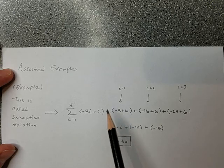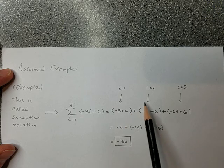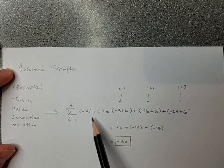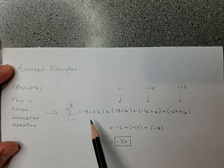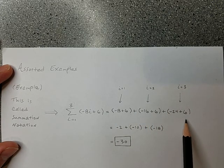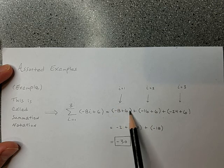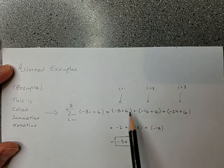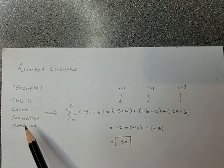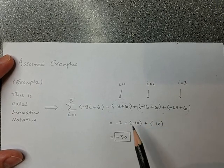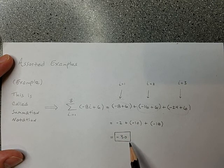You see what I have here? If I put 1 into this, it looks like negative 8 plus 6. If I put 2 into this, it looks like negative 16 plus 6. And then if I put 3 in, I get negative 24 plus 6. And then I'm adding all those individual results together. I put 1 in, I put 2 in, I put 3 in, I get these individual numbers, and I add them together. That's why it's called summation notation. Summation meaning sum, meaning add together. That turns out to be negative 2 plus negative 10 plus negative 18, which is grand total of negative 30.